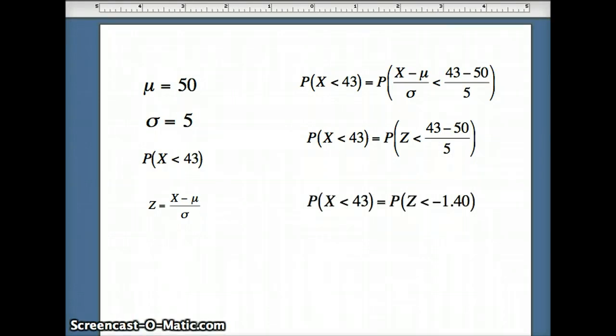So now we have the probability z is less than 43 minus 50 over 5, or negative 7 over 5, or negative 1.4. So I want to find the probability that z is less than negative 1.4. I can do that by going to my applet. It's available from Stanford, and there is the URL if you'd like to find it yourself.